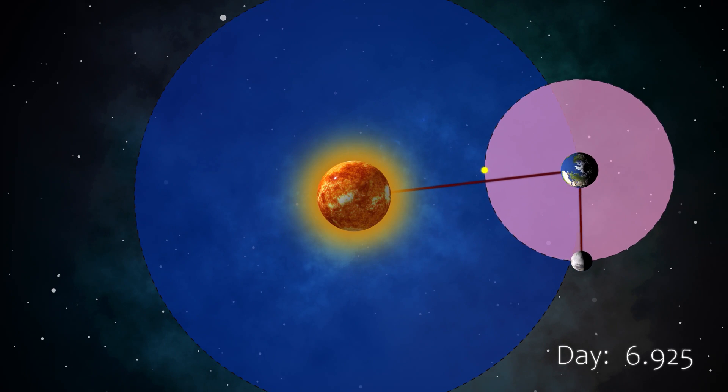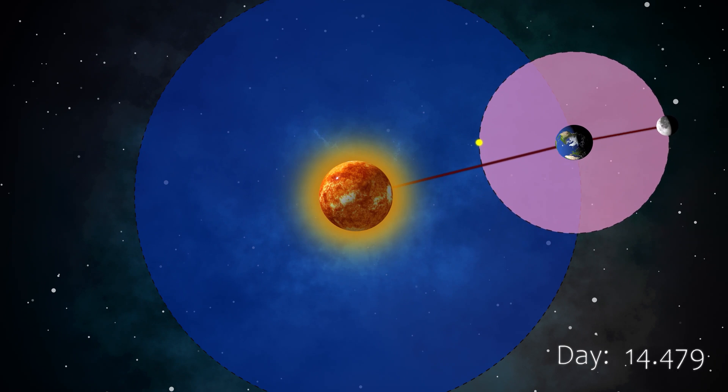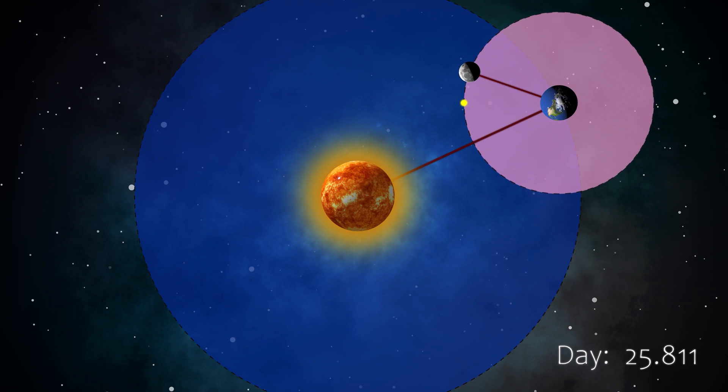As the moon goes around the earth, notice that the earth is not stationary and it is also going around the sun.